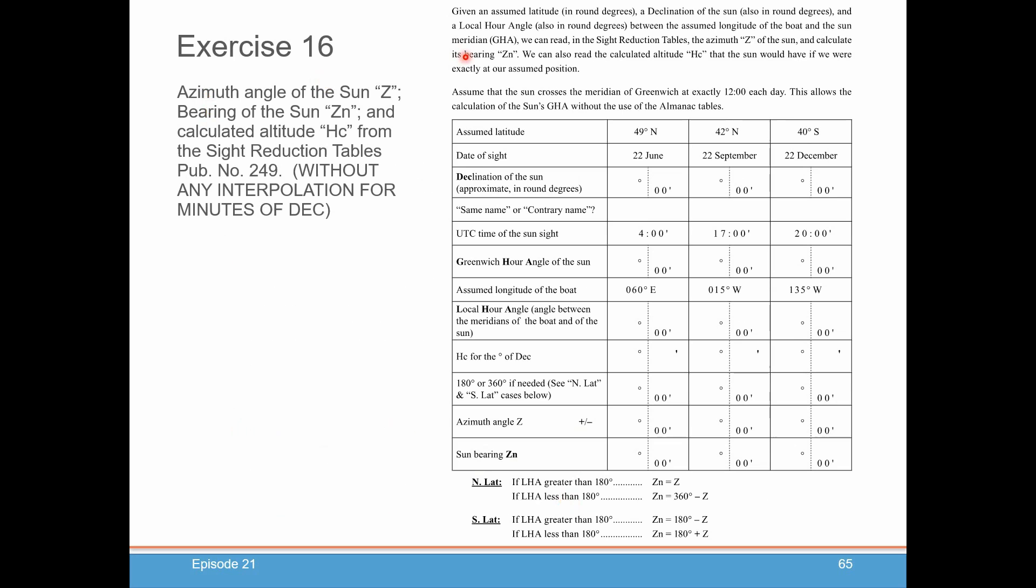Here's that exercise. It's number 16 in the book. You can read the directions, but it's pretty self-explanatory. The one thing I will tell you is that the sun will be assumed to have crossed the Greenwich Meridian at exactly noon for each day posted in the site, whether it's 22nd of June, 22nd of September, or 22nd of December. Those are very special dates in the year for the sun, and that should give you a good hint as to what the declination of the sun should be.